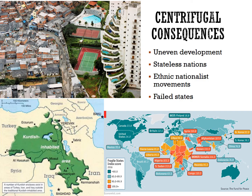Czechoslovakia was driven to break up through nationalist movements from the Czech and Slovak nations, albeit peacefully. East Timor in the South Pacific saw a more violent nationalist movement as they sought independence from Indonesia. After the UN stepped in, East Timor gained sovereignty in 1999 and is now known as Timor-Leste. Countries like Korea, Vietnam, Germany, and Ireland all saw periods of fragmentation based on centrifugal forces.